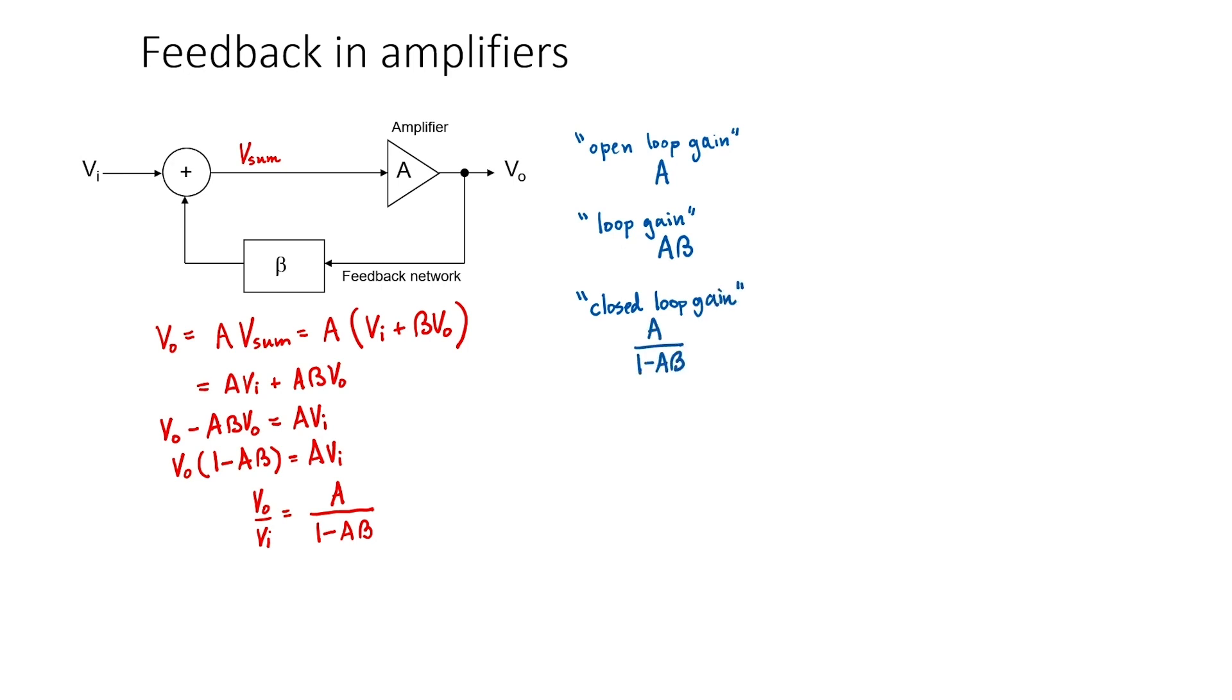Some textbooks have a negative sign built into beta automatically. I should also point out that sometimes closed loop gain and loop gain are used interchangeably, so the meaning might not always be clear. I'll try to make sure we always keep it well defined here.